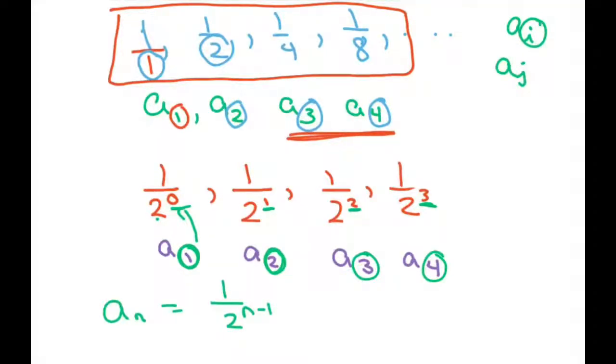And you could plug it in and see if it works. Let's plug in this one. So A sub 4 equals 1 over 2 to the 4 minus 1, which is 1 over 2 cubed, which is 1 eighth. So that's what you're getting at.